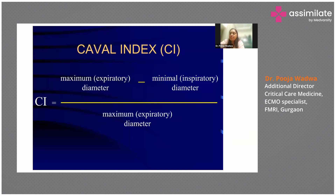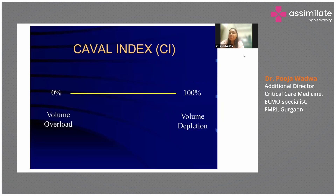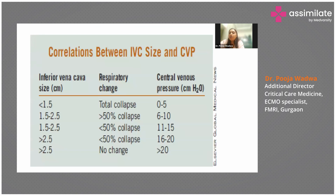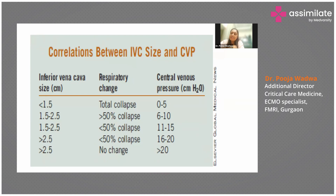During inspiration the IVC collapses because of transmission of pleural pressure, and during expiration it doesn't. The collapsibility index is: maximum expiratory diameter minus the inspiratory diameter, divided by the expiratory diameter. Through this we can assess whether your patient requires fluid. If the collapsibility index ranges from 0 to 100 percent — the lower side means the patient is already full. A rough estimate of CVP: if IVC size is less than 1.5 cm, CVP is around 0 to 5.